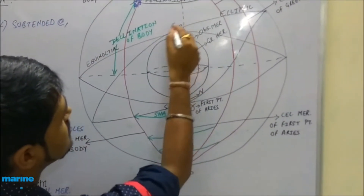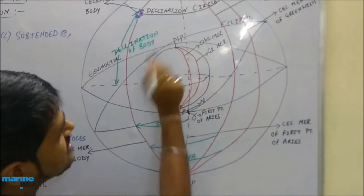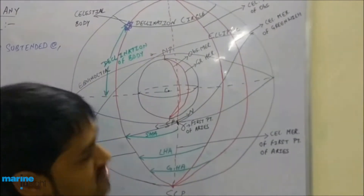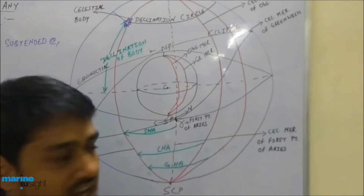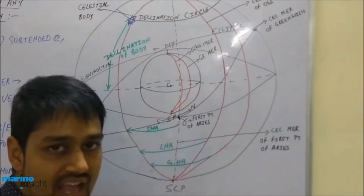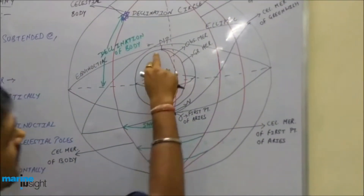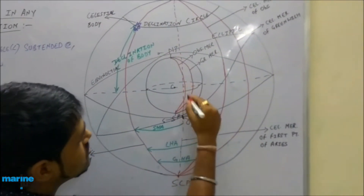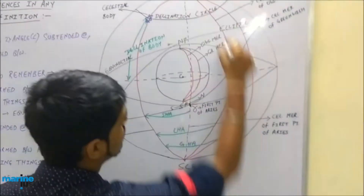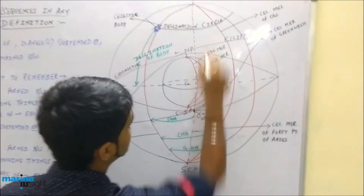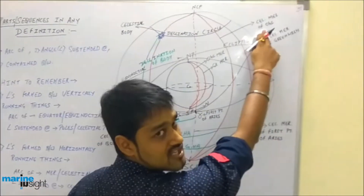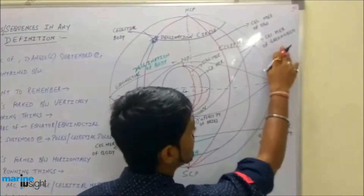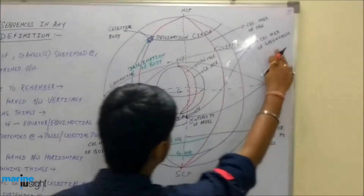When the sun crosses from north to south, that intersection point is known as the first point of Libra. Libra is not of navigational importance; we only consider Aries. The observer's meridian and the exterior green one — the Greenwich meridian — extend onto the celestial sphere to become the celestial meridian of the observer and the celestial meridian of Greenwich respectively.